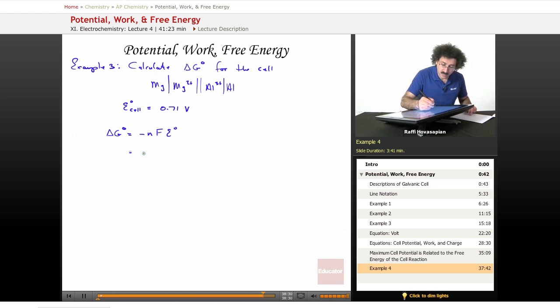Now let me write the equations down so we remember what n is. We had aluminum 3+ plus 3 electrons goes to aluminum, and magnesium goes to magnesium 2+ plus 2 electrons. The total number of moles of electrons transferred - remember we had to multiply this equation by 2 and this equation by 3.